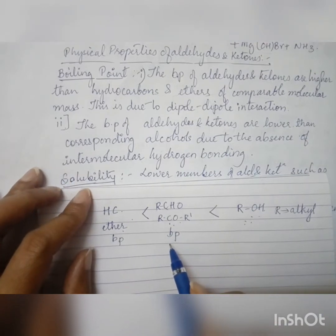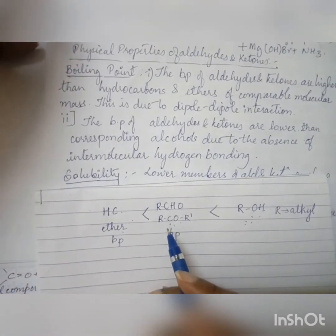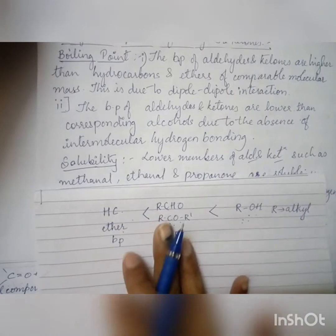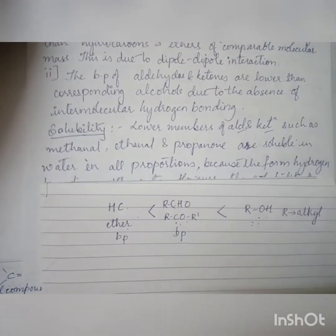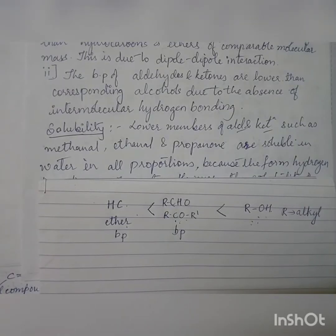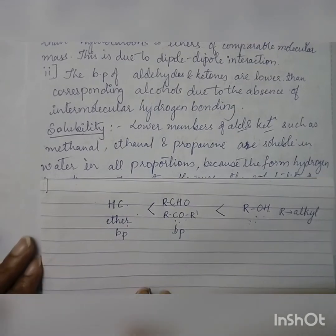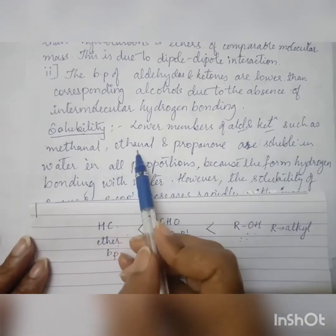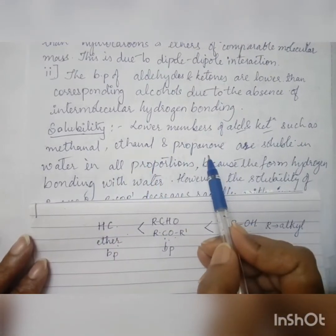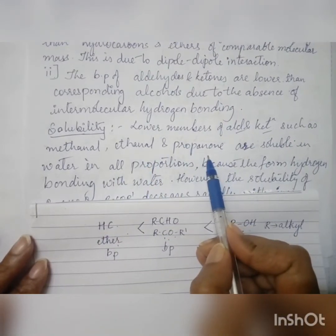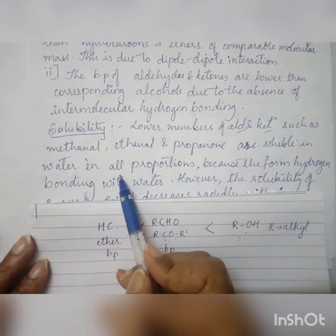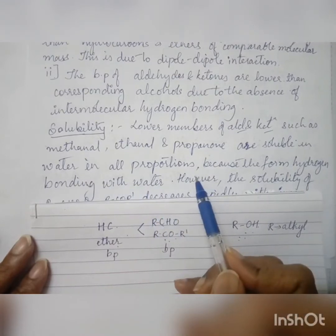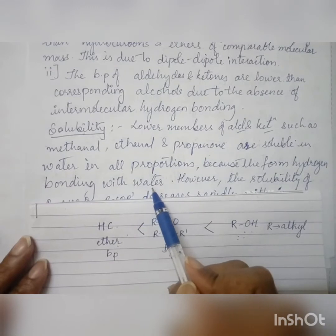That covers the first property — boiling point. Next, we have solubility. The lower members of aldehydes and ketones, such as methanal, ethanal, and propanone, are soluble in water in all proportions because they form hydrogen bonds with water.